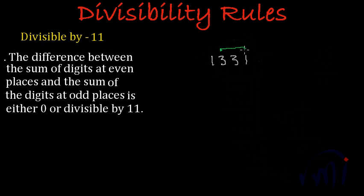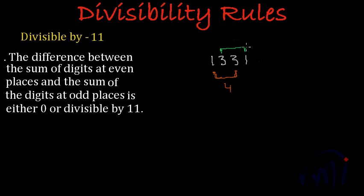These are the numbers at odd places, and these are the numbers at even places. We have to find the sum of the digits at even places and the sum of the digits at odd places. The sum of the digits at even places is 1 plus 3, which gives us 4. The sum of the digits at odd places is also 3 and 1, so 3 plus 1 is again 4.